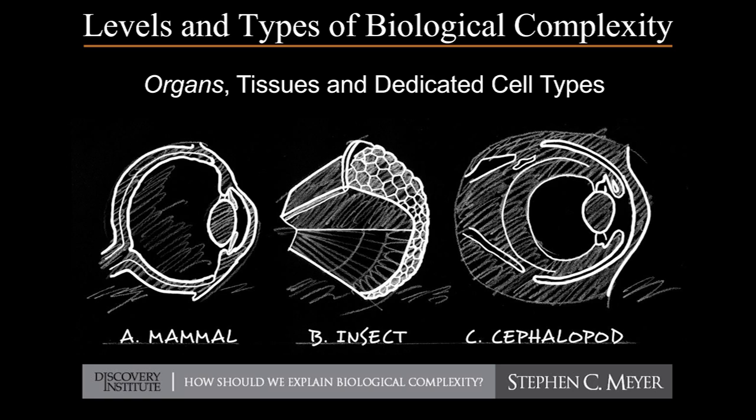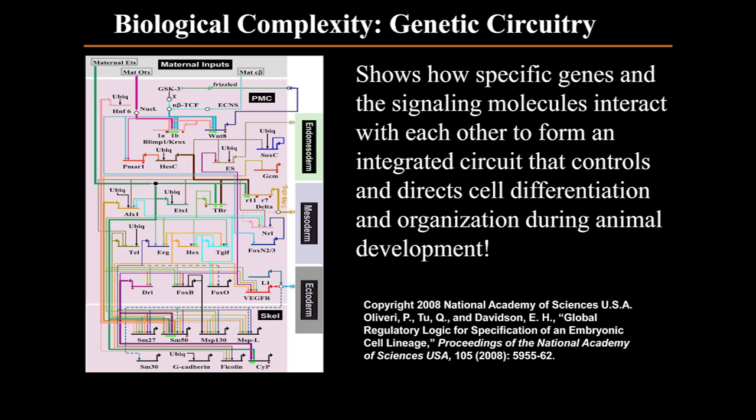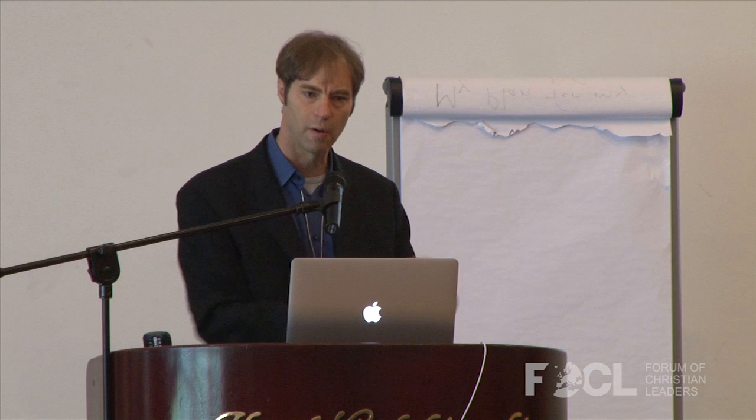We could also be talking about the individual parts or organs, the tissues, the different cell types that constitute an animal body plan — such as the compound eye found in insects or fossilized trilobites at the very dawn of animal life. Or we could be talking at a different level about the genetic circuitry required for animal body plans to develop properly. This is a fascinating area of developmental biology. The slide on screen shows a circuit depicting how specific genes and signaling molecules interact to form integrated circuits that control cell differentiation and organization during animal development from fertilized egg to adult.